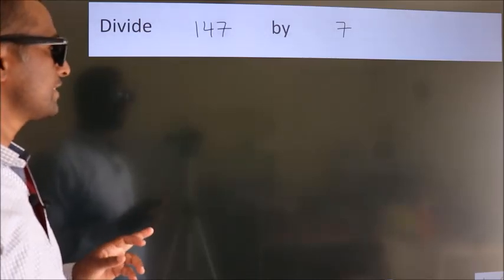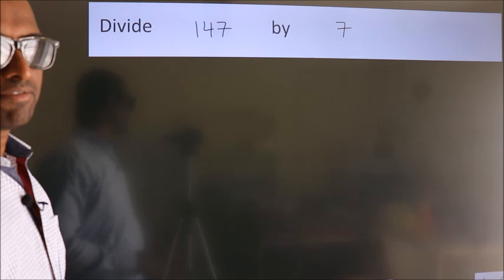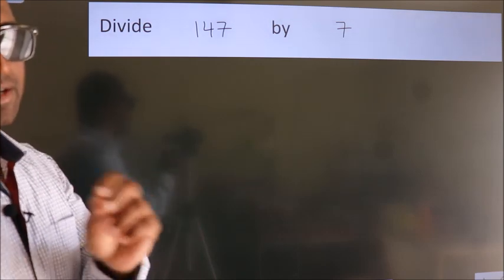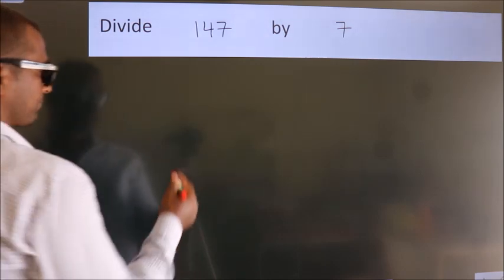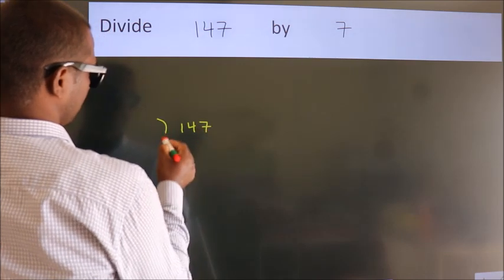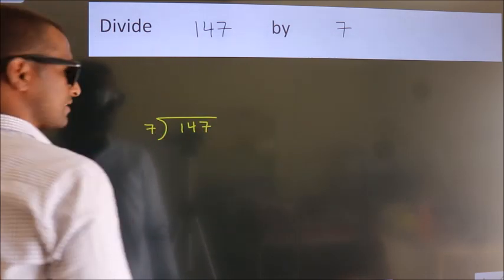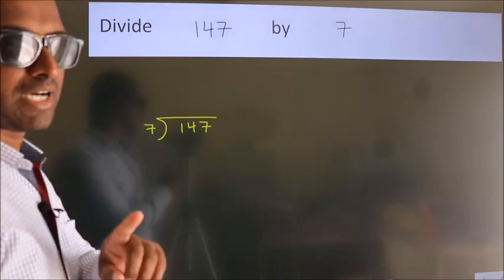Divide 147 by 7. To do this division, we should frame it in this way. 147 here, 7 here. This is your step 1.